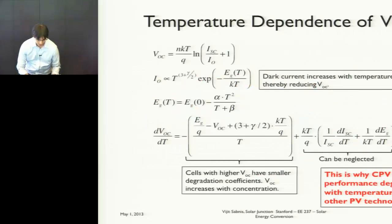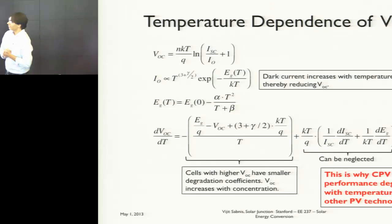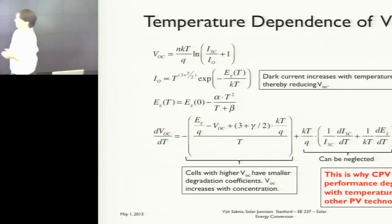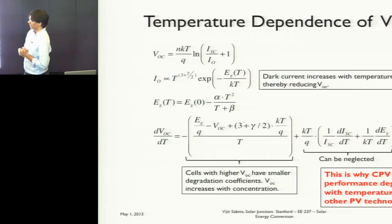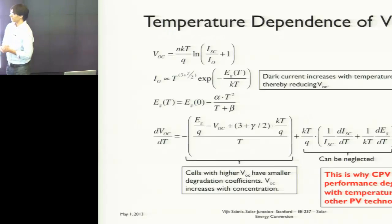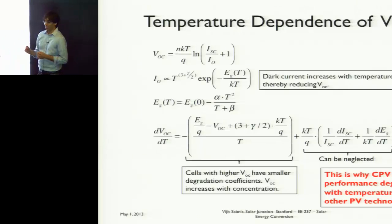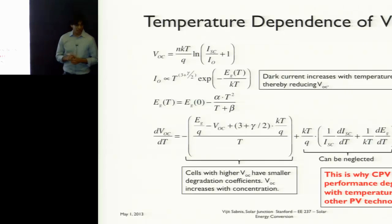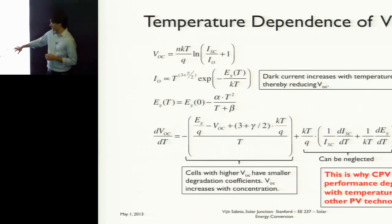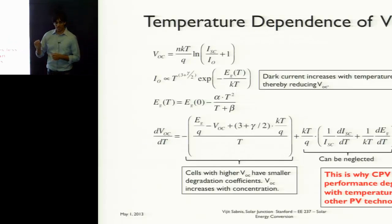Because your band gap decreases, your VOC will also decrease. But one of the really key points here is that because the open-circuit voltage in multi-junction solar cells is significantly higher than in traditional single-junction solar cells, the VOC degradation coefficient is much, much lower. This means that CPV performance degradation versus temperature is much less than in traditional single-junction solar cells.